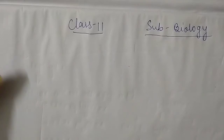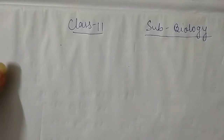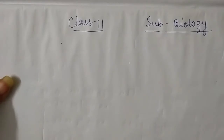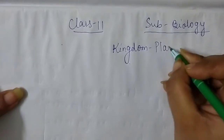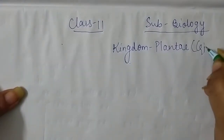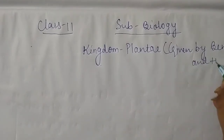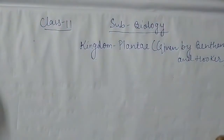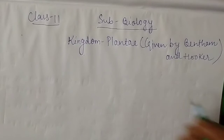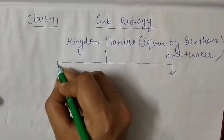The classification given by Bentham and Hooker is a natural type of classification system, which considers the type of nutrition, cell type — that is, cytology — and different internal and external characters to classify the plants into different categories. We are starting the Kingdom Plantae classification, and firstly we will divide Kingdom Plantae into two parts.